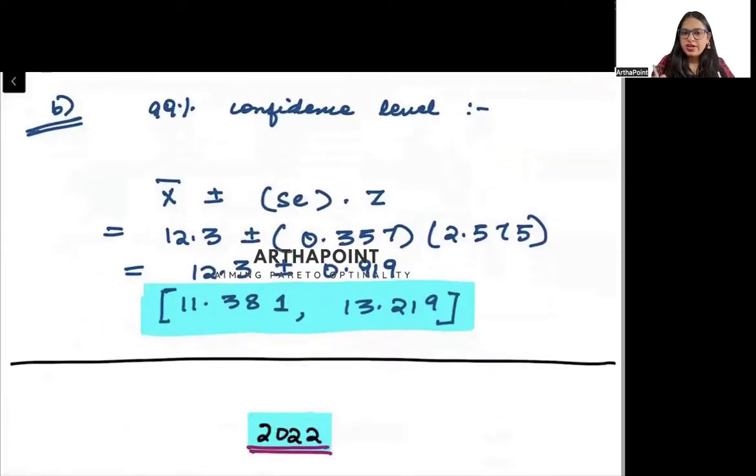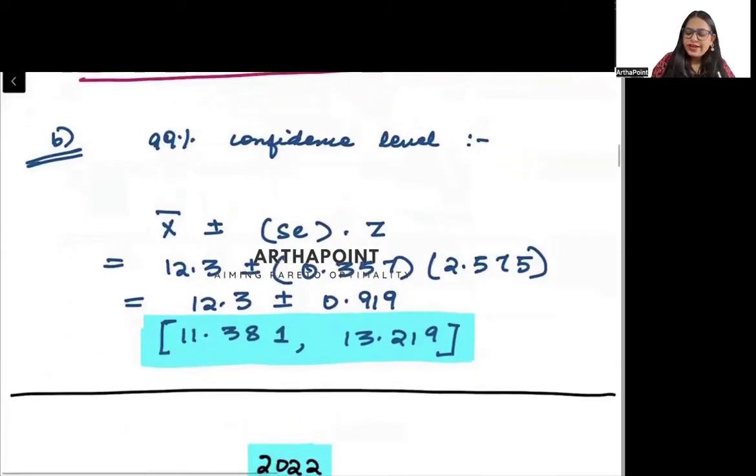Now come to the next question. So you need to find for 99% confidence level.